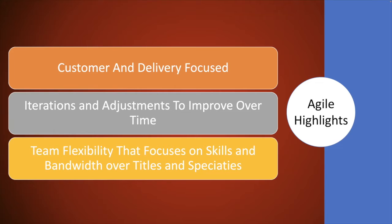Agile focuses on iterating as we move towards software development, making adjustments as we go. We're not going to try to get something 100% before we move on — we'll build it out to a certain level, then revisit it. If the customer comes back with feedback, we're going to adopt that change and iterate or refactor as needed. Agile also tends to be more focused on team flexibility — it's about who is available on the team to keep things moving, rather than having specialists sitting idle waiting for their turn.